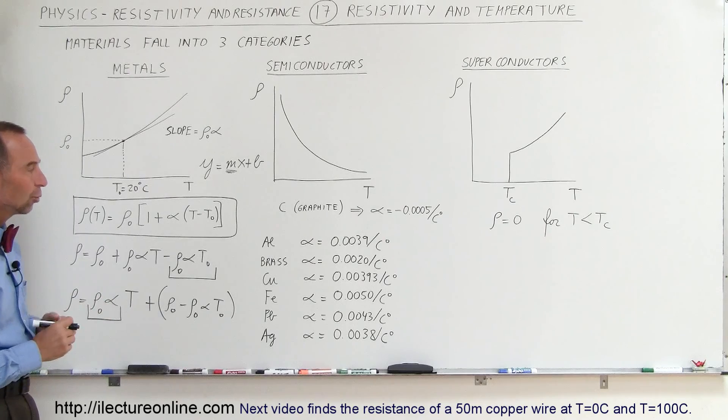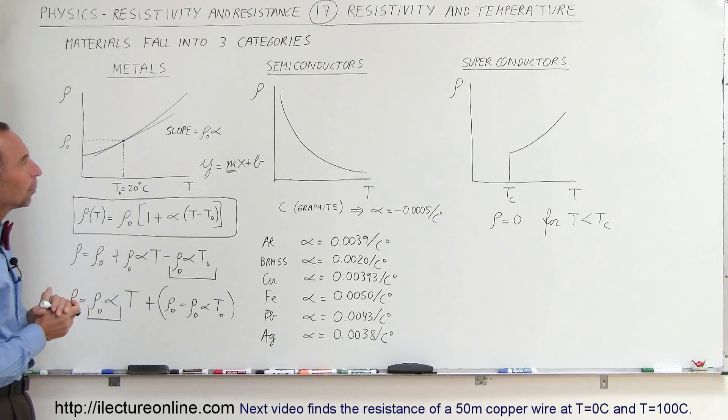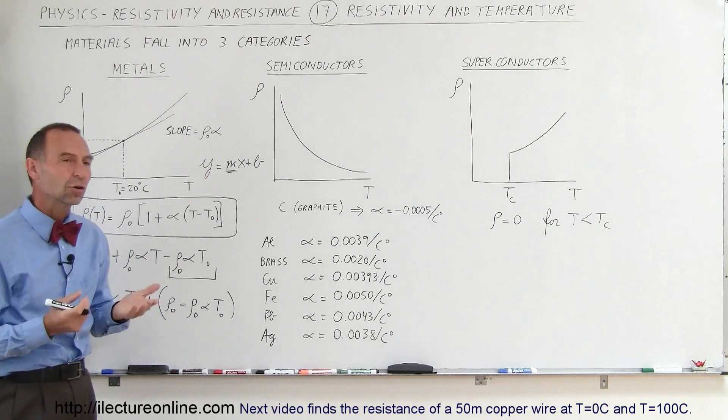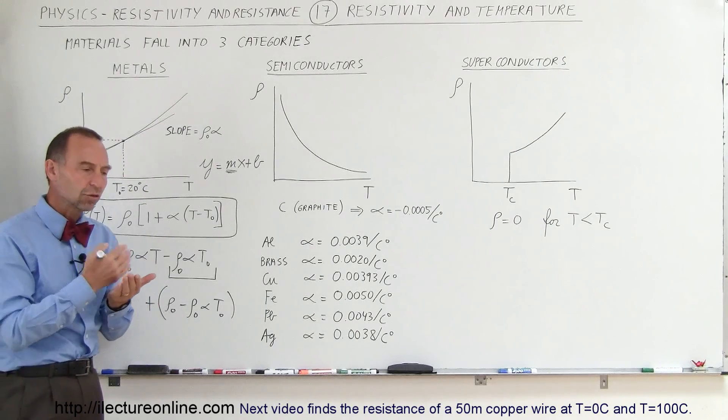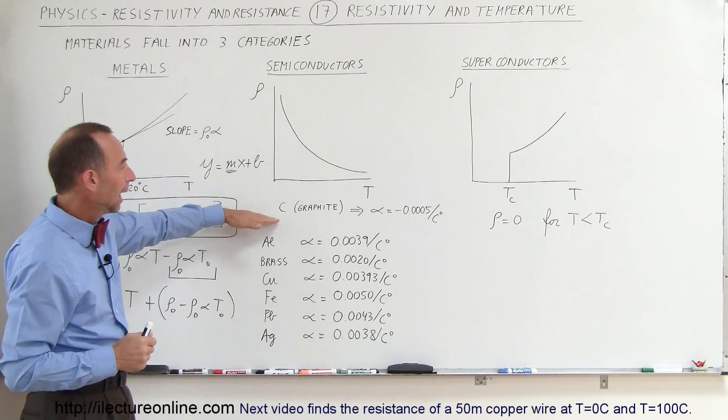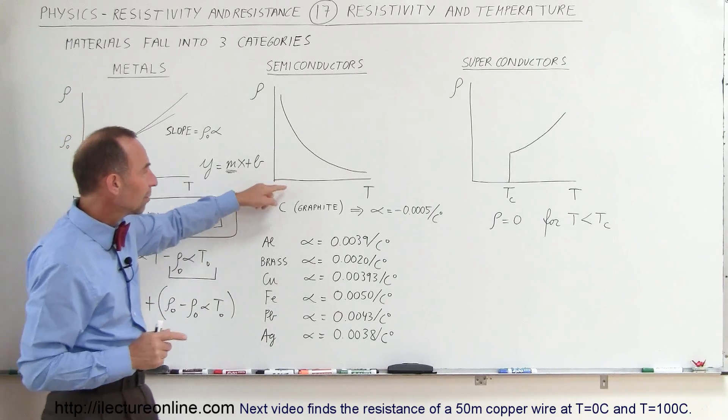Now a couple more things we want to look at here. Semiconductors are a very different kind of material. Semiconductors conduct electricity or current fairly easily, and notice here that as temperature increases, the resistivity of semiconductors actually decreases.